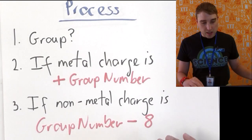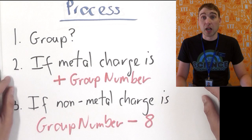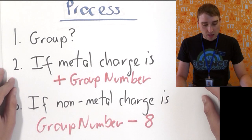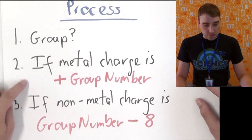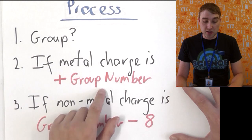So the process to do that is, first thing you need to do is find the group that the atom belongs to. Then follow these two rules. If it's a metal, then it will have a positive charge and that charge is the group number.